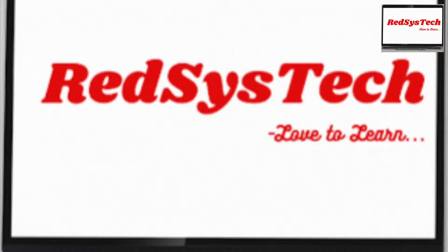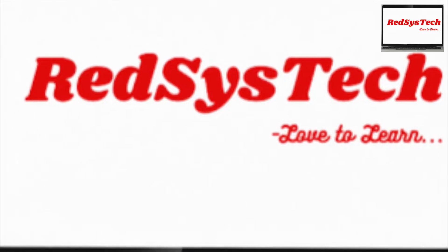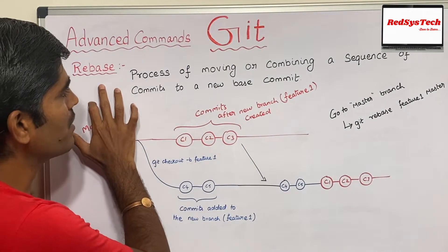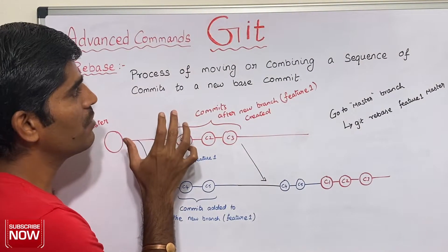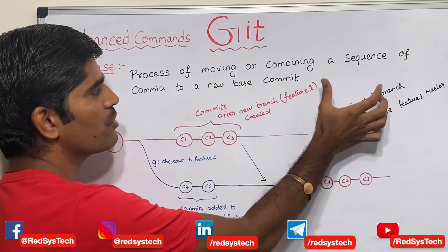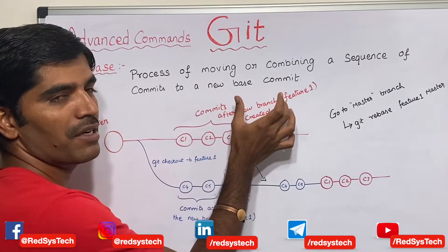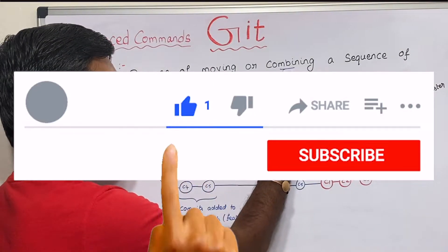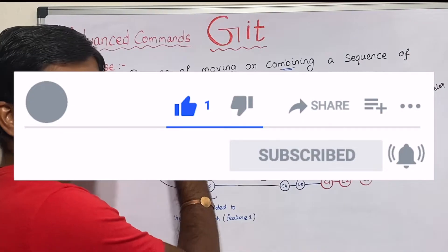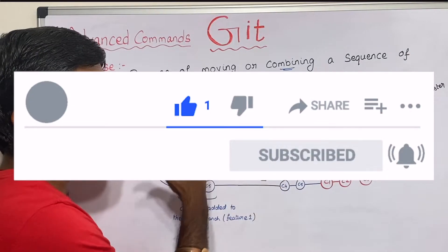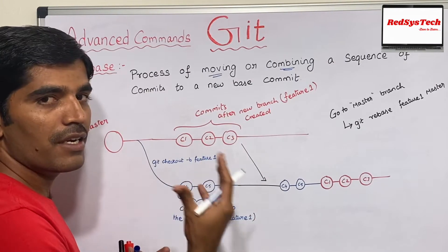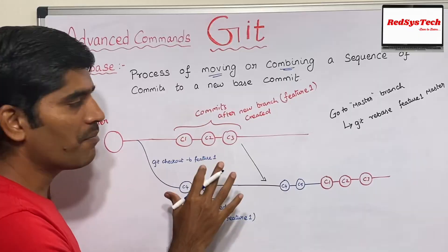Rebase in git is nothing but the process of moving or combining a sequence of commits to a new base commit. It's kind of like combining some of the commits and getting them into another commit.